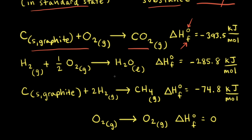Let's look at some more equations showing the formation of one mole of a substance. For example, the equation for forming one mole of water: water is composed of hydrogen and oxygen, and the most stable forms of those two elements under standard conditions are hydrogen gas and oxygen gas. For the coefficients to make one mole of water, we need one half as the coefficient in front of O₂. The standard enthalpy of formation for one mole of water is negative 285.8 kilojoules per mole.